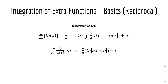Here is a more general form. The integral of k over (ax plus b) dx equals k over a — where a is the derivative of the denominator — times ln of the denominator, plus c.